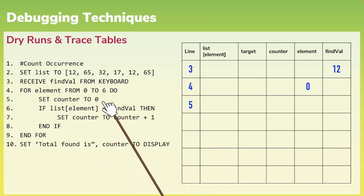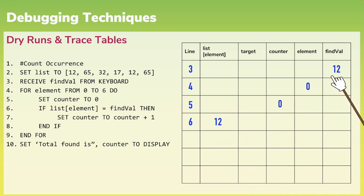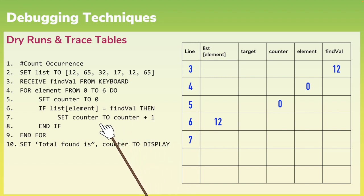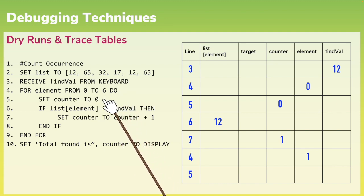We then proceed to line 5 where counter is also set to 0. Moving on to line 6, we are looking for list[element]. Element is equal to 0, therefore we are looking for list[0] which is 12. On line 6 we are checking if list[element], which is 12, is equal to find_val, which is also 12. Therefore we go on to line 7, where we set counter to the previous counter plus 1. The previous counter is 0, plus 1 we now have 1. As we are in a loop, we now repeat back to line 4, where we increment element by 1. We then proceed to line 5 where we set counter to 0. From here we can see that there is an error within the design of the code, as we are resetting the counter to 0 within the loop. So by manually running through the code, I have identified where the error is within my trace table.